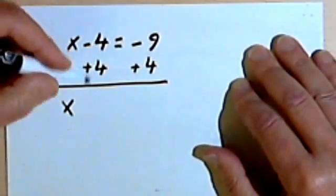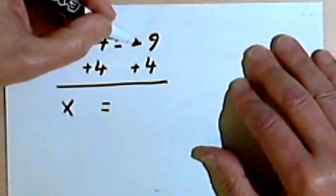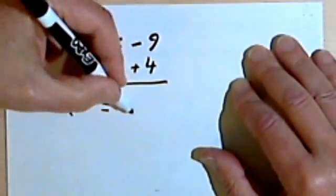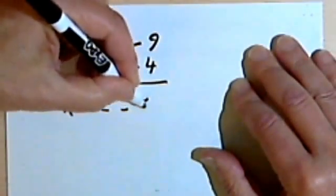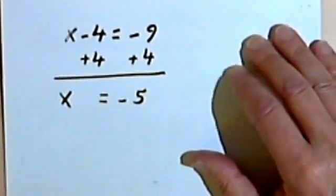Well, that's just 0, so I don't have to write that. Then I've got negative 9 plus 4, and this will give me a negative 5. Once again, I can check it.